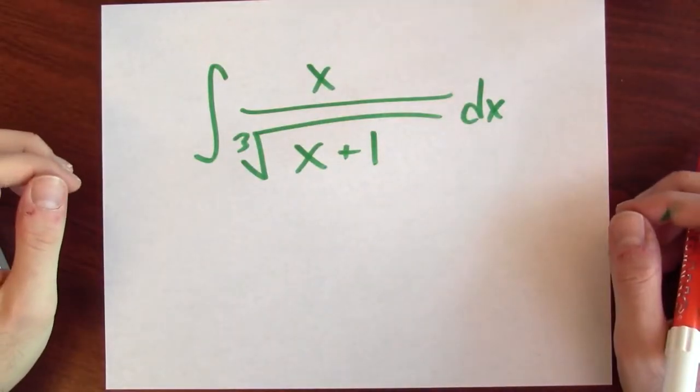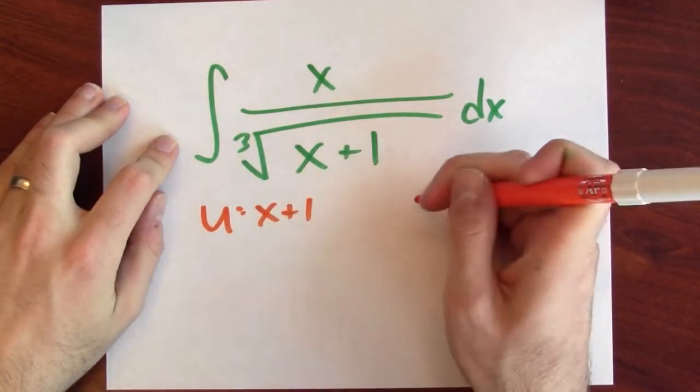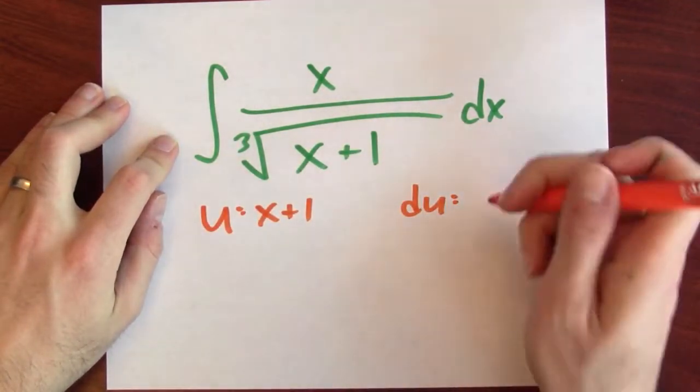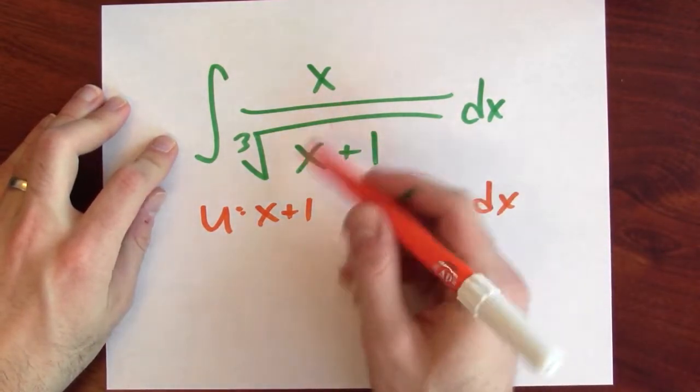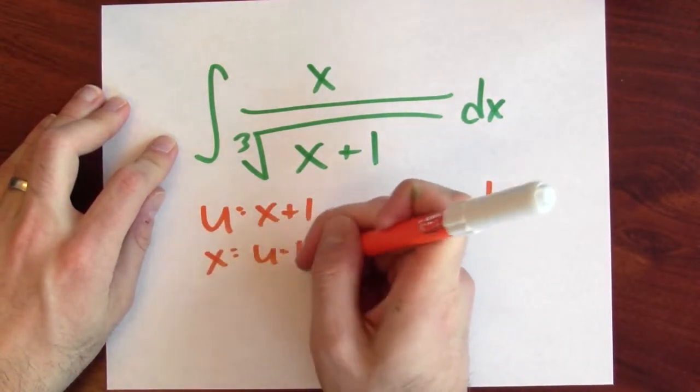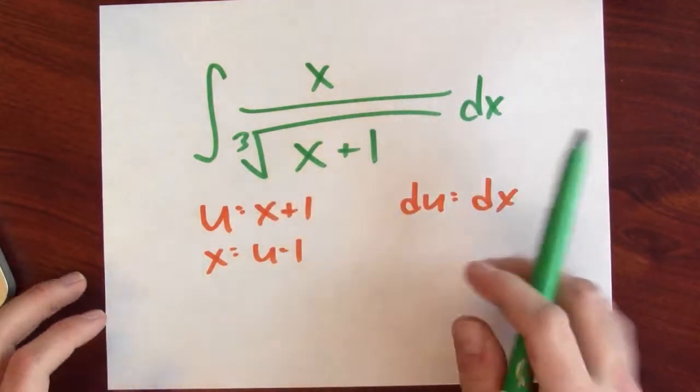Can I make a substitution to improve the integrand? What substitution do I want to make? I really have some choices. One thing I could do is make u equal x plus 1, and in that case du is just dx. If u is x plus 1, then x is u minus 1, and I can then rewrite this anti-differentiation problem.